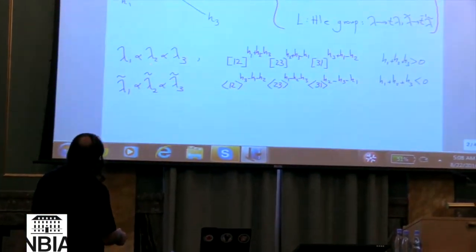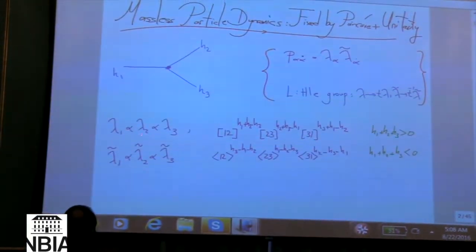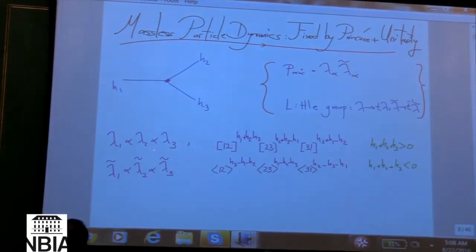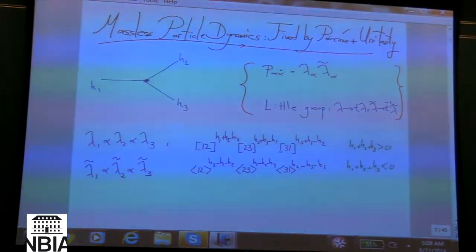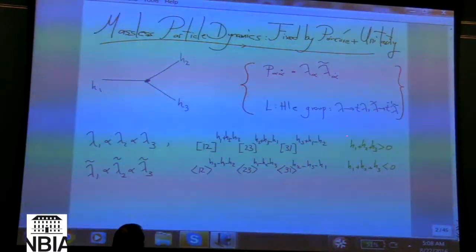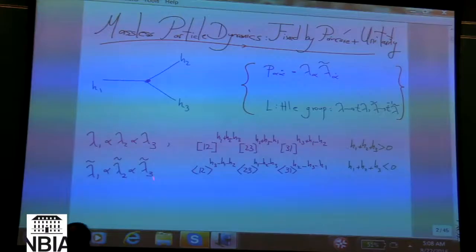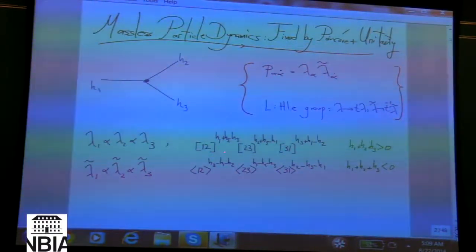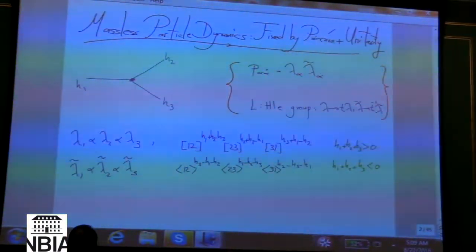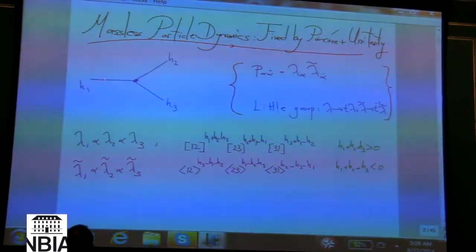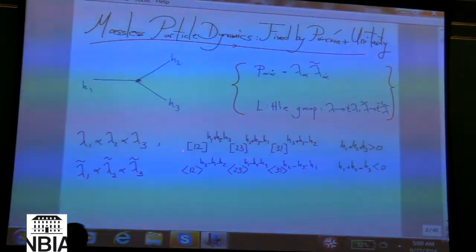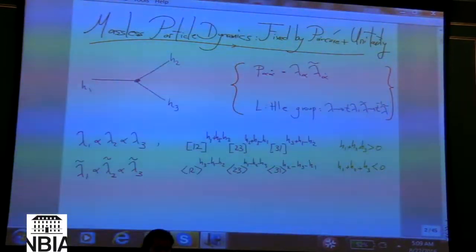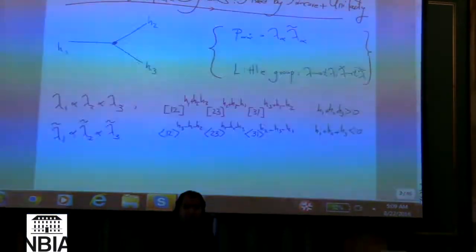A simple feature of three-particle momentum conservation is that there are two configurations: either the lambdas are all proportional to each other, or the lambda-tildes are all proportional to each other. The only invariants we can build are contractions with epsilon symbols. One configuration depends only on square brackets, the other on angle brackets, and the powers are entirely determined by the helicities of the external particles. So up to the coupling strength, three-particle amplitudes are fixed purely by Poincaré invariance.